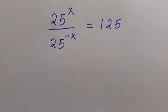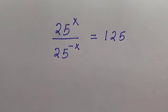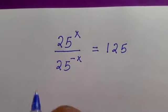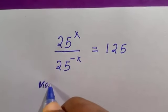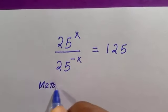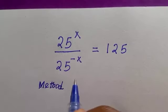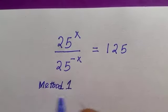Welcome to another video. Let's solve this exponential problem: 25 raised to power x divided by 25 raised to power minus x equals 125. Let's see the first method of solving this.